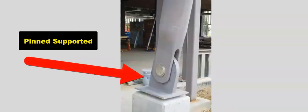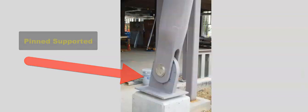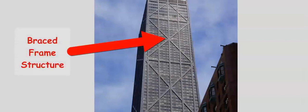To avoid structural failure due to wind loads, where the dead weight of the structure is not sufficient to resist wind loads, additional structures, supports and fixings may be required. Bracing a tall structure can help resist wind loads.